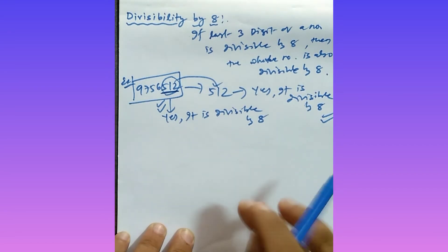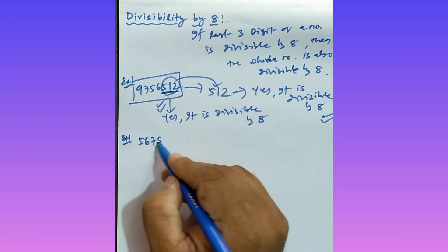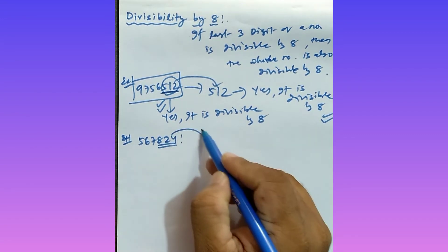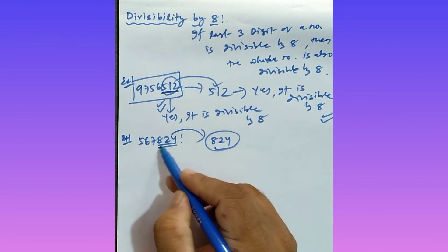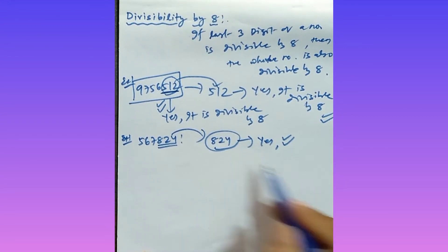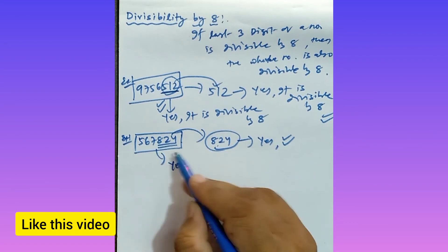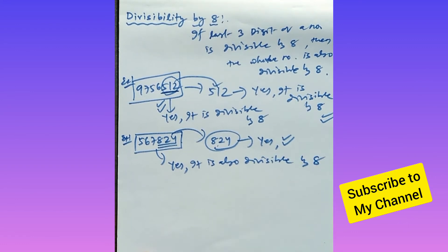Another example: take this big number and look at the last three digits — that is 824. Is 824 divisible by 8? Yes, it is divisible by 8. So this big number is also divisible by 8.